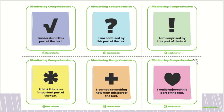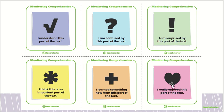Here are some symbols you can use to make note of what you're thinking in the text. When reading, you could put a little tick if you understood that part, a question mark if you were confused, an exclamation mark if you were surprised, a star if you think it was a really important part of the text, a plus sign if you've learned something new, and a love heart if you really enjoyed that part of the text.